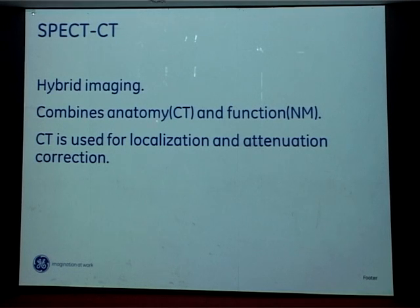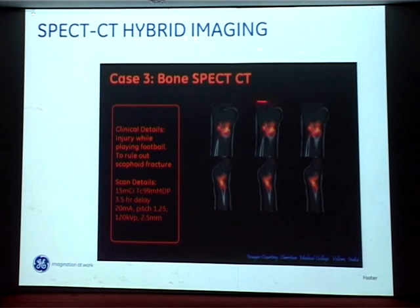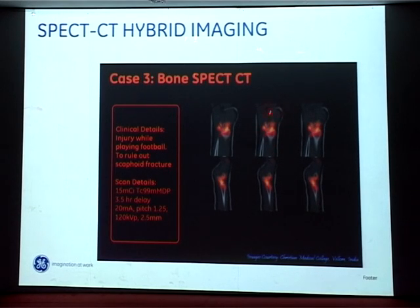PET-CT is hybrid imaging that combines anatomy from CT and function from nuclear medicine. The CT is used for localization and attenuation correction. Looking at a PET-CT image: a patient had an injury while playing football — this area of increased uptake is picked up by the nuclear medicine bone scan and fused to the CT image, adding considerable diagnostic value for the treating physician.